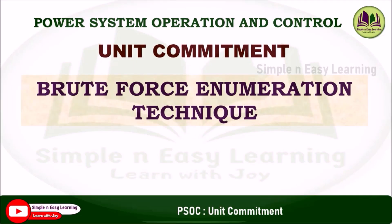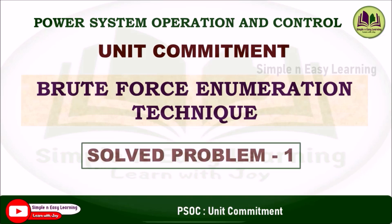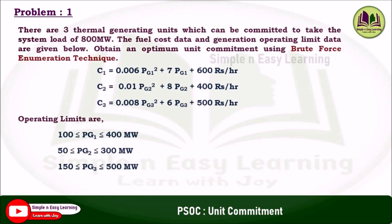We need to solve problem one using the brute force enumeration technique. There are three thermal generating units which can be committed to take the system load of 800 megawatt. The fuel cost data and generation operating limits data are given. We need to obtain an optimum unit commitment using brute force enumeration technique. These are the three fuel cost functions and the operating limits.